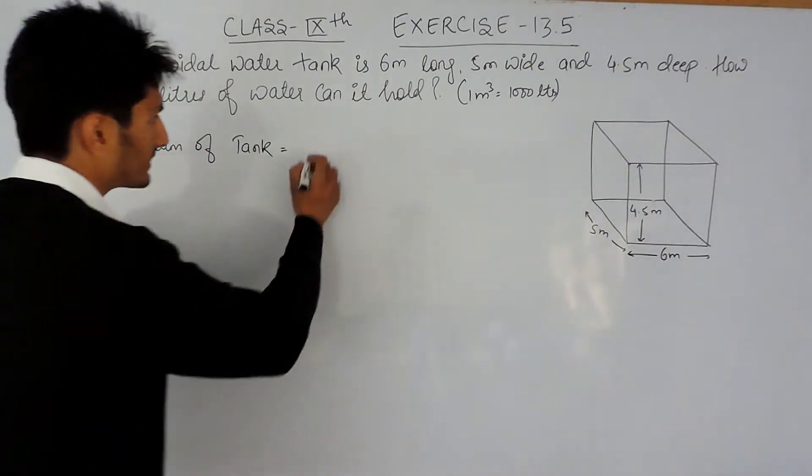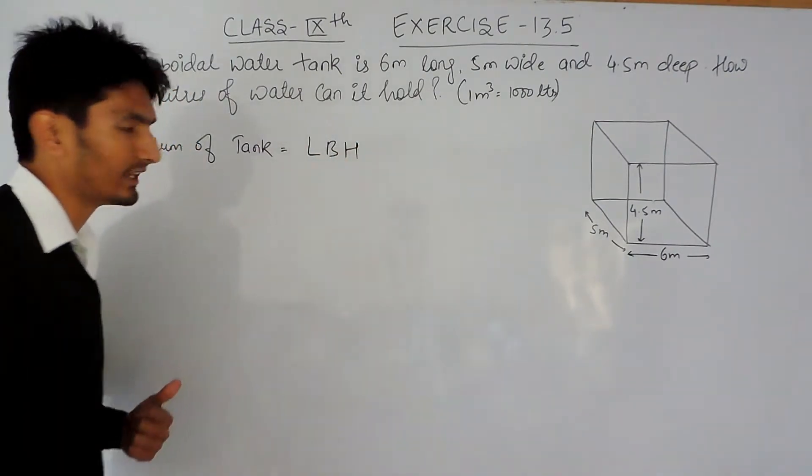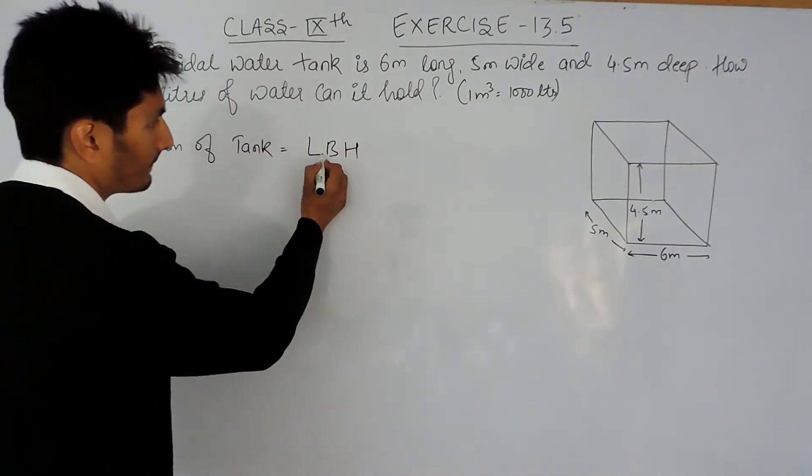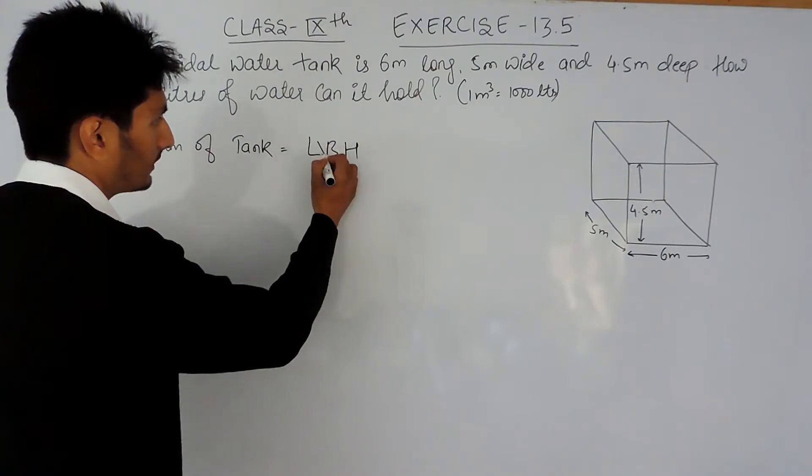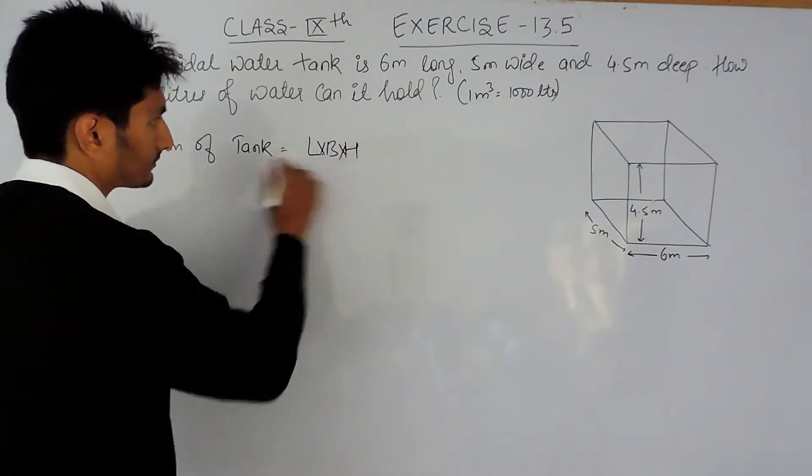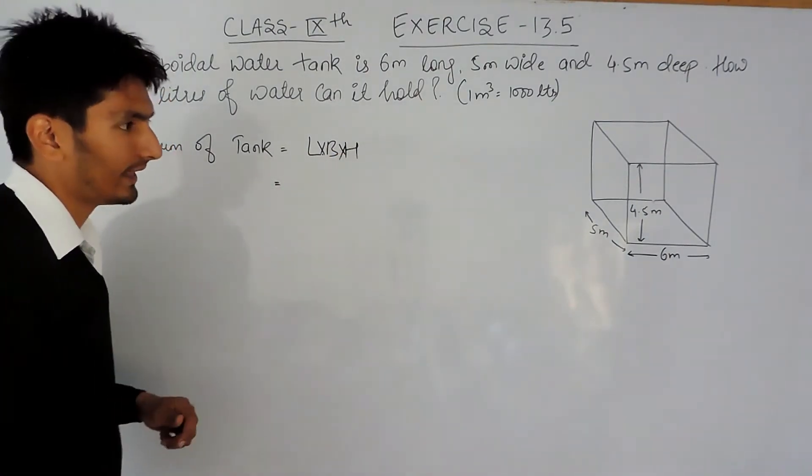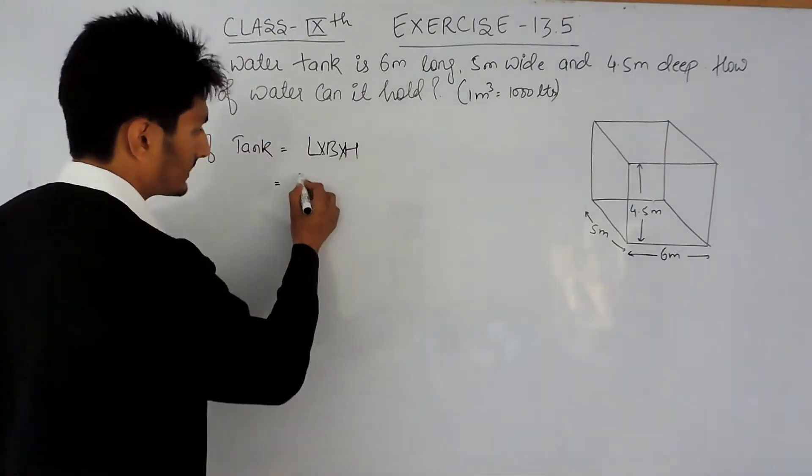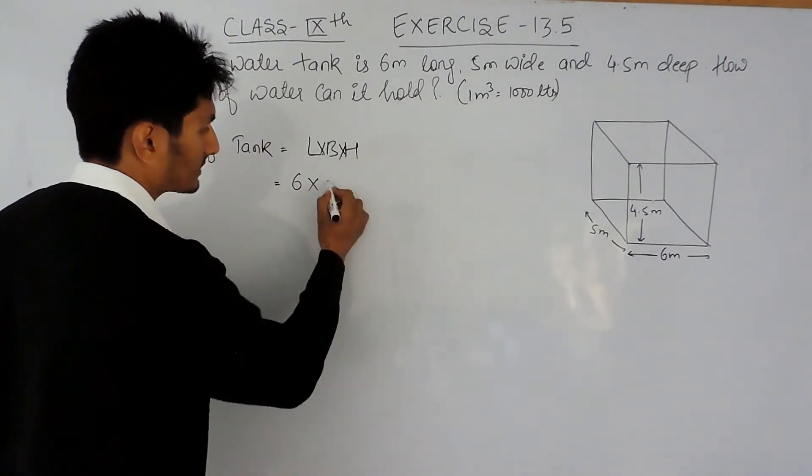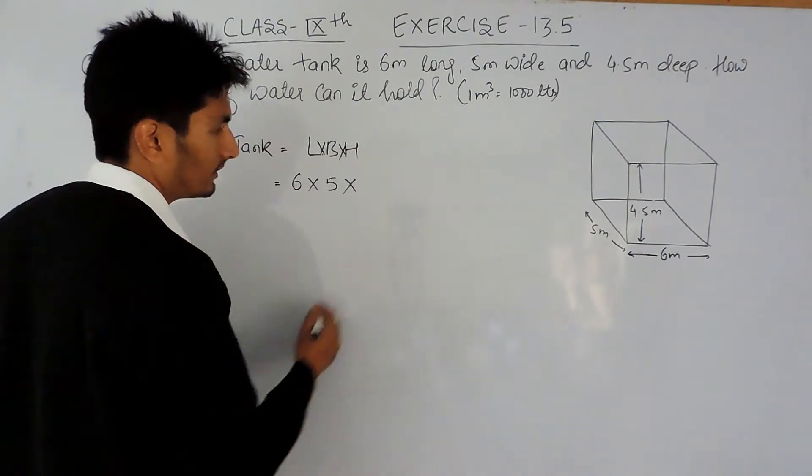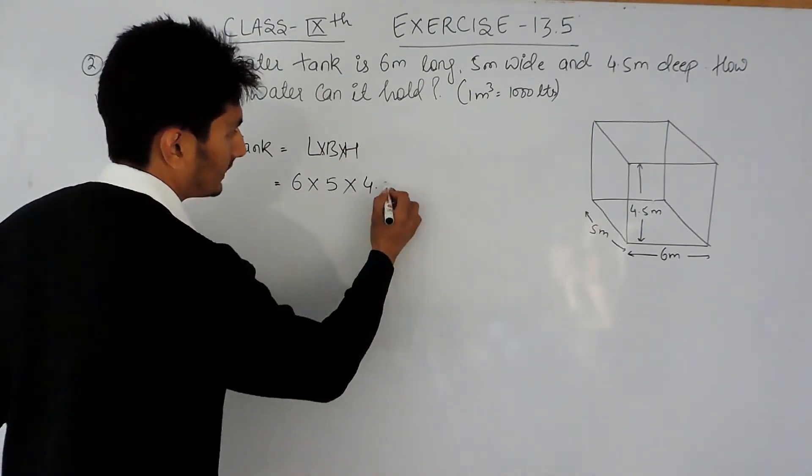The volume of a cuboid is l×b×h, that is length multiplied by breadth multiplied by height. Here, the length of this cuboid is 6 meters, breadth is 5 meters, and height, or you can say depth, is 4.5 meters.